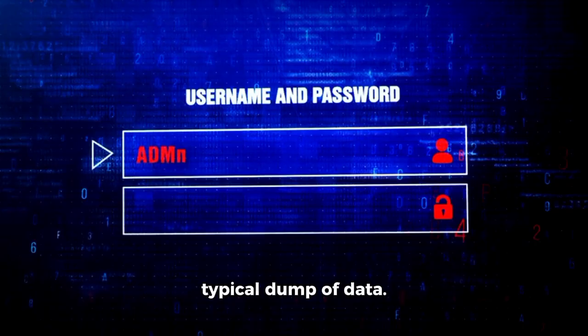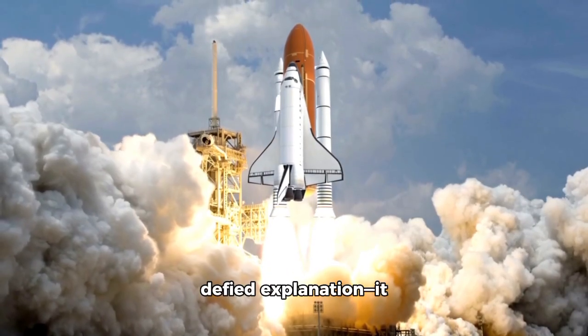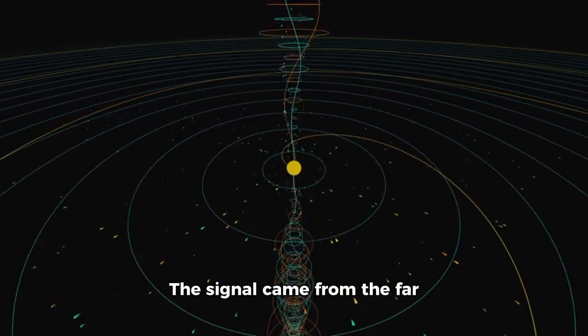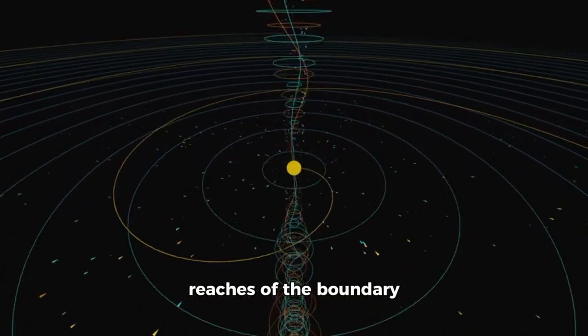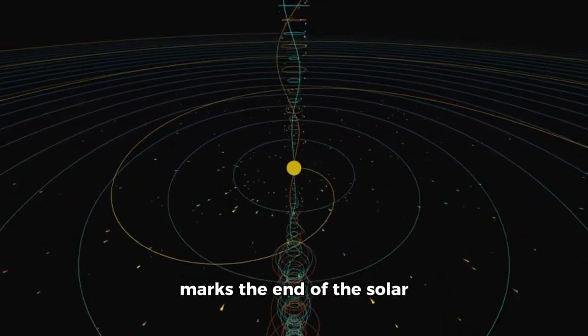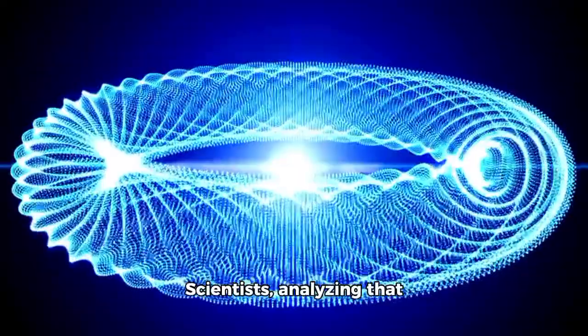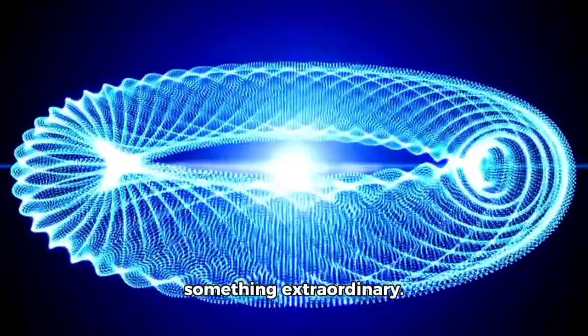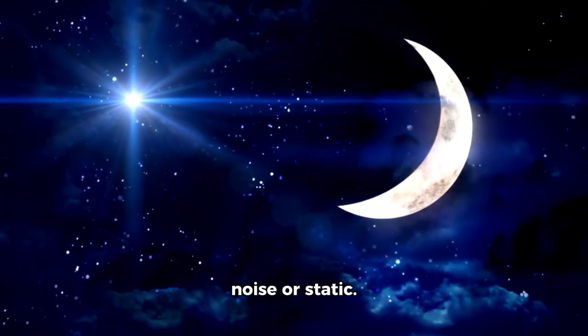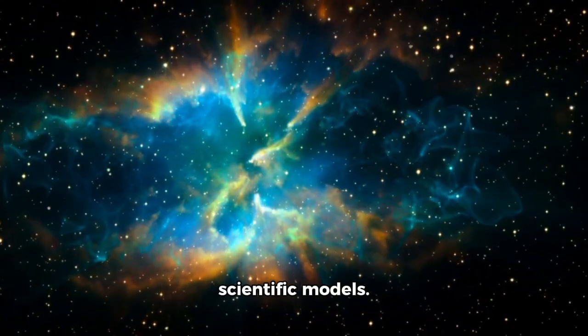It wasn't your typical dump of data. The information it carried not only defied explanation, it defied known science. The signal came from the far reaches of the boundary between our sun's influence and the interstellar space beyond, where the heliopause marks the end of the solar wind's reach. Scientists analyzing that transmission discovered something extraordinary. It wasn't just noise or static. The signal was organized and carried information in itself.